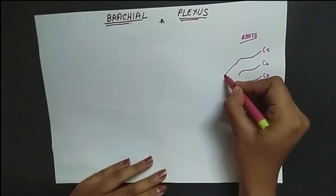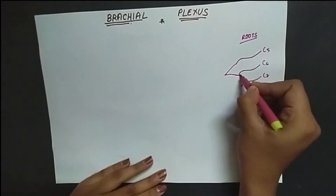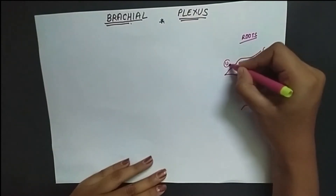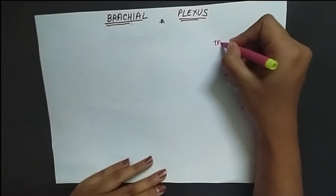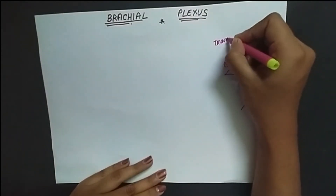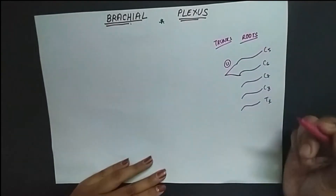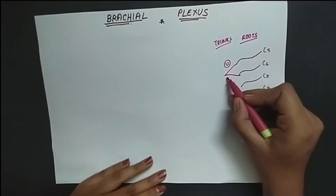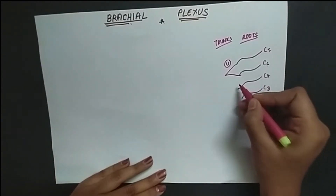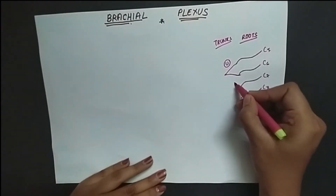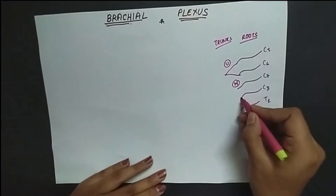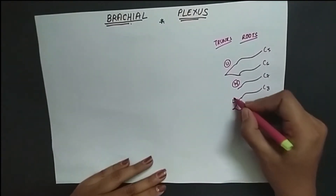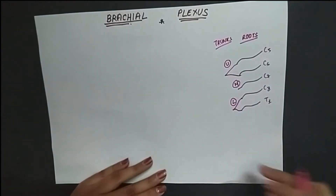C5 and C6 join together and form the upper trunk. C7 alone forms the middle trunk, and the last roots, C8 and T1, join together and form the lower trunk. These are all the trunks.